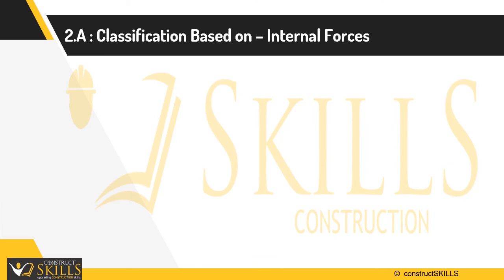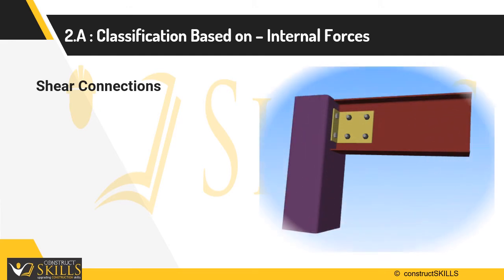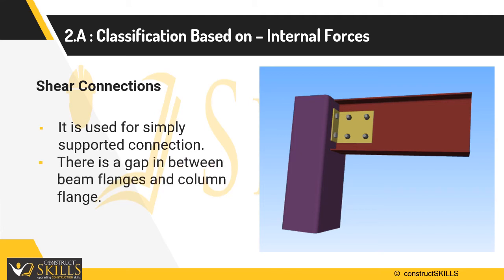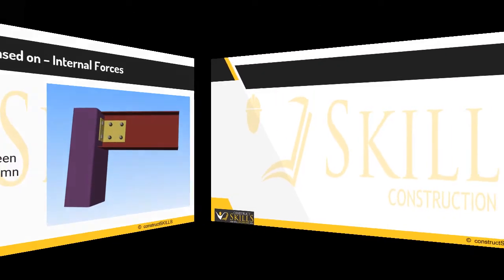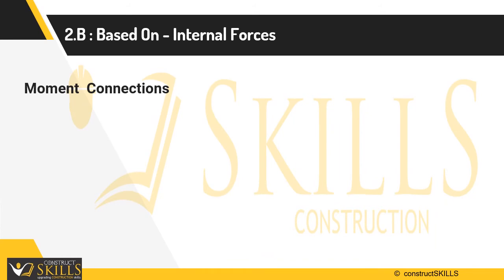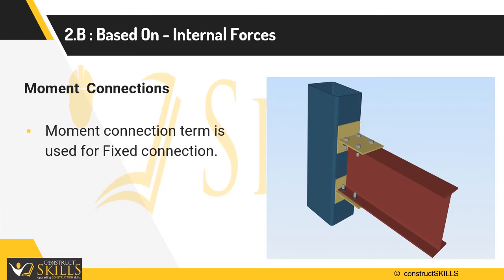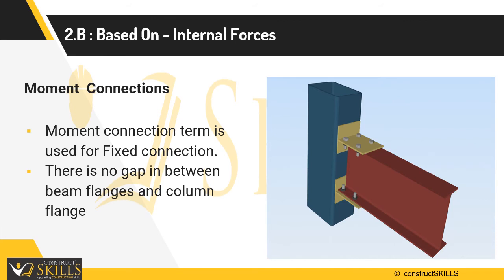Classification of joints based on internal forces: internal forces are important considerations when designing steel connections. A shear connection is a joint that allows for the transfer of shear forces between two members; it is used for simply supported connections. There is a gap between beam flanges and column flange, allowing the beam space for rotation, so the connection is called a shear connection. A moment connection is a joint that allows the transfer of bending moment forces between a column and beam; it is used for fixed connections. If there is no gap between beam flanges and column flange, the beam has no space for rotation, making it a rigid or moment connection.